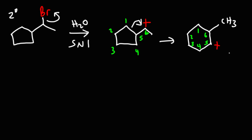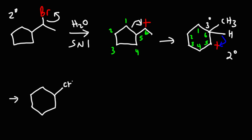What we have is a secondary carbocation adjacent to a tertiary carbon. Whenever you have this situation, a hydride shift will occur. This hydride is going to move toward that carbocation, so now the hydrogen moves over and this carbon — which lost the bond — is going to have the positive charge.